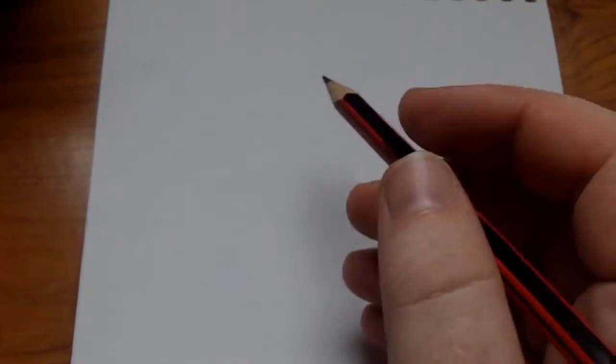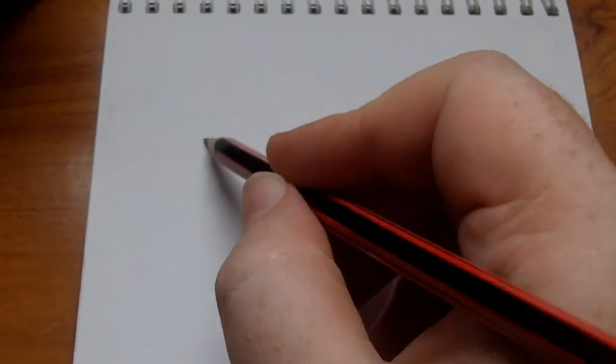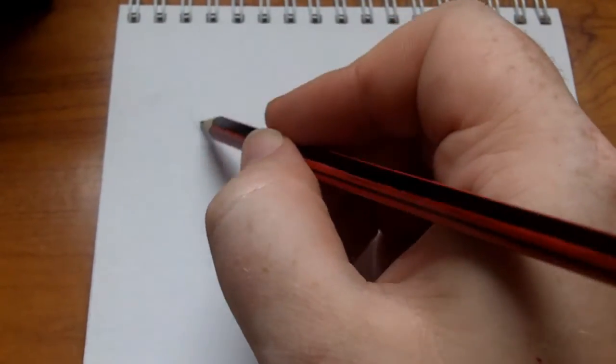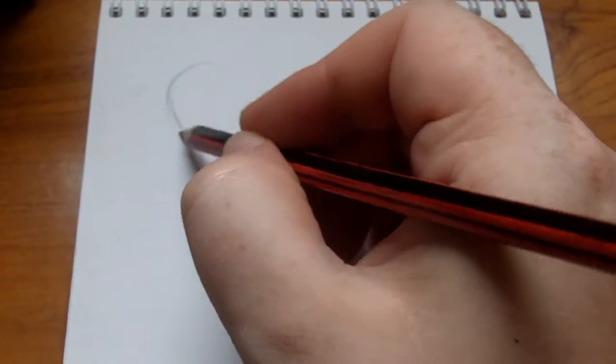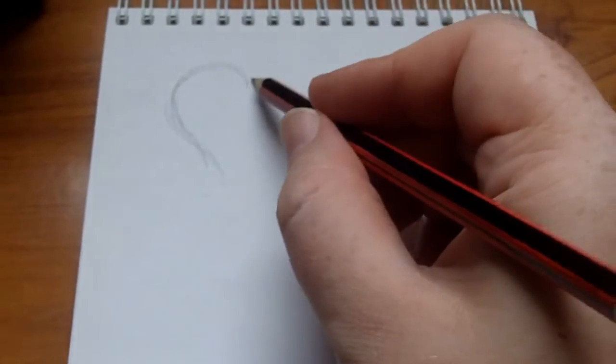Hi, this is Wayne Tully and this is day 50 in the drawing journal video series. Today I will be drawing some quick tattoo ideas, simple heart-shaped ones.